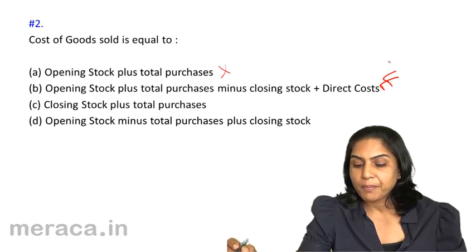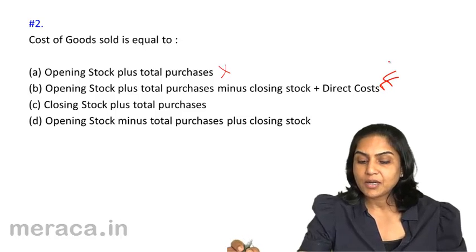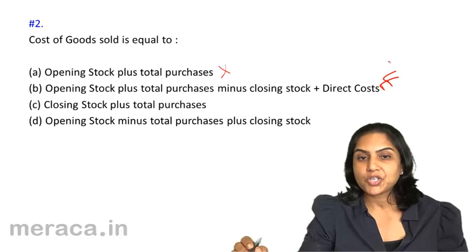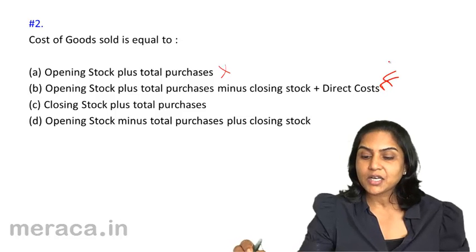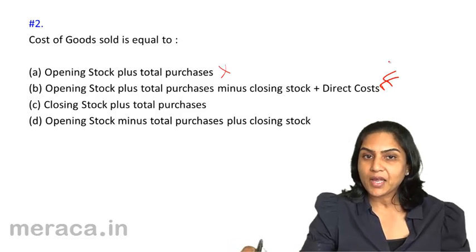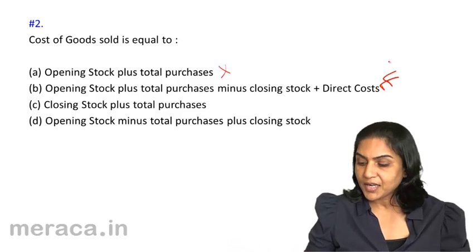Other options — opening stock minus total purchases plus closing stock — are incorrect. So Option B should be the correct answer.